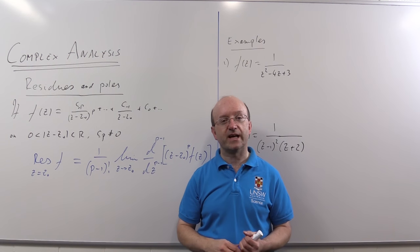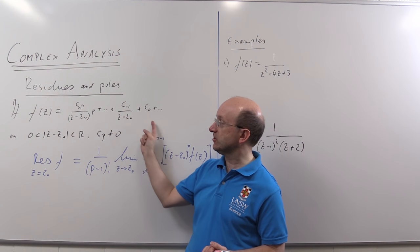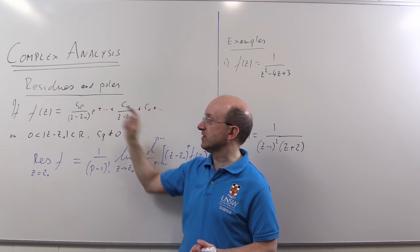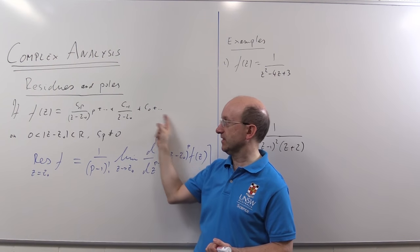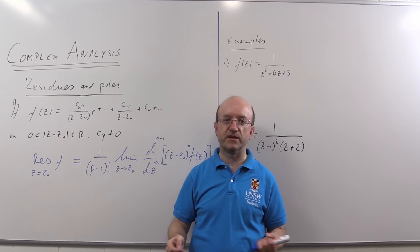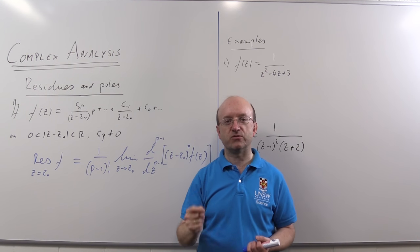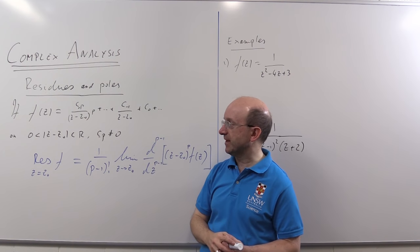Now to remind you what happens when we have a pole, we have a pole if an analytic function can be written in this shape: C minus P over Z minus Z naught to the P plus then higher order powers on Z minus Z naught, strictly bigger than zero and less than some number R, where this C minus P coefficient is not zero. That's a pole of order P.